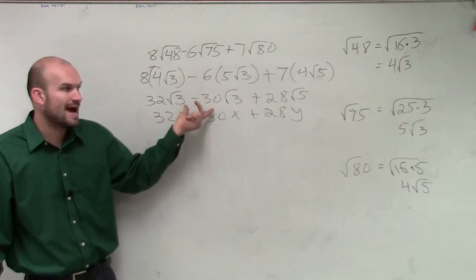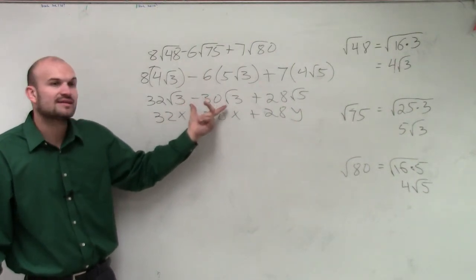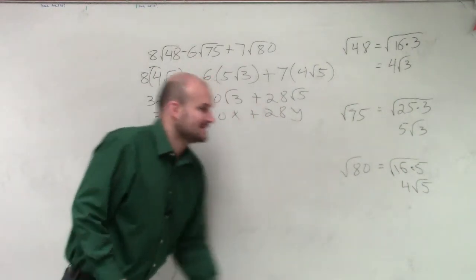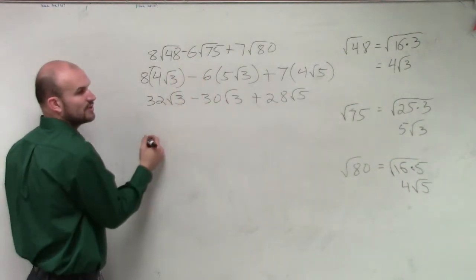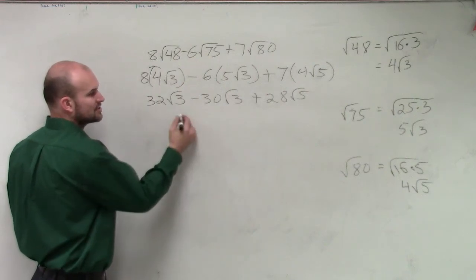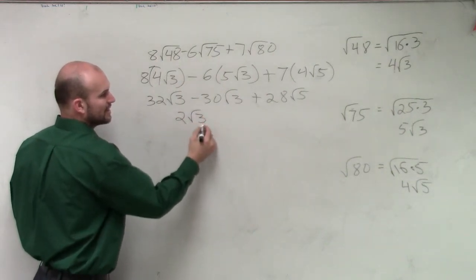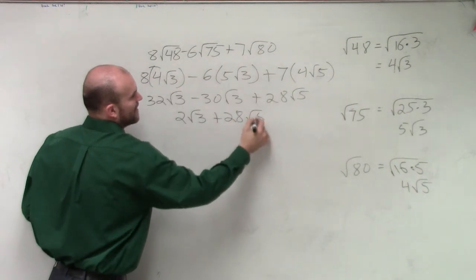It's the same properties that are going to apply with your square roots. I can only subtract when they have the common square root. So therefore, when subtracting, or when simplifying this, I'm just going to have 32 square root of 3 minus 30 square root of 3. It's just going to be 2 square root of 3, plus 28 square root of 5.